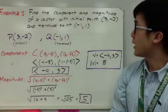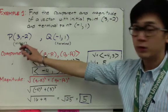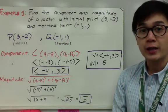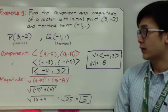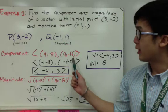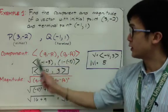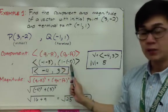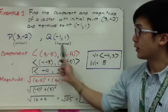In the first example, let's find the component and magnitude of a vector with initial point at (3, negative 2) and terminal point at (negative 1, 1). It's important to keep track of the initial and terminal points, as your answer depends on them. Using the component formula (q sub 1 minus p sub 1, q sub 2 minus p sub 2), we get: negative 1 minus 3 for the first pair, and 1 minus negative 2 for the second pair. Simplifying gives us the component vector (negative 4, 3).